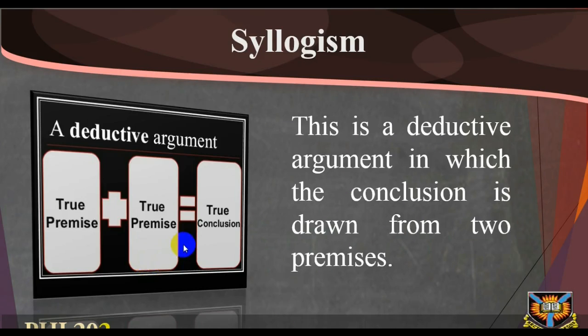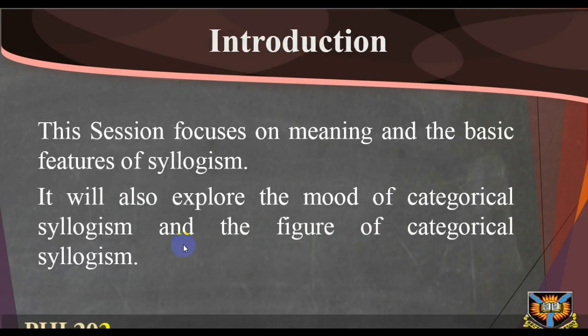Learning Outcomes: When you have studied this session you should be able to: 1. Define and use correctly the term syllogism. 2. Describe the features of categorical syllogism. 3. Explain the mood of categorical syllogism. 4. Determine the figure of a categorical syllogism.